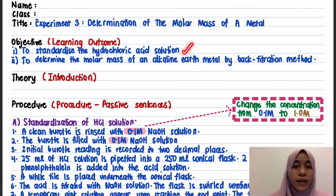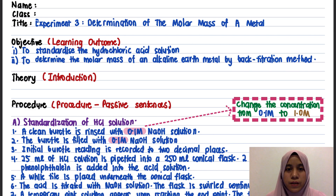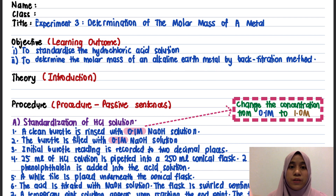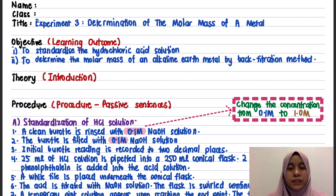To standardize the hydrochloric acid solution, you are going to titrate the hydrochloric acid with a known molarity and volume of a base, so you can find out the molarity and standardize the HCl solution. Besides that, by the back titration method, we can actually determine the molar mass of the metal used in Part B of our experiment.